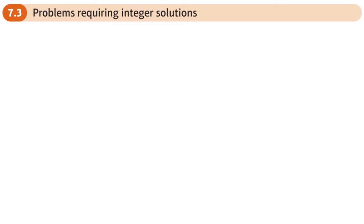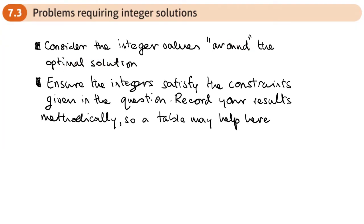This is the third section of chapter seven on the simplex algorithm, and here we're going to be looking at problems requiring integer solutions. When we require integer solutions, the first thing we need to do is consider the integer values around or near to the optimal solution. The second thing is you need to ensure that the integers satisfy the constraints given in the question, and it may be useful to record your results in a table so that you don't miss anything.